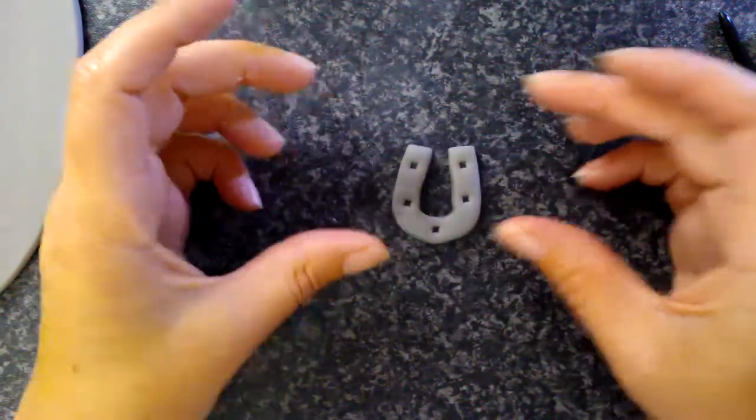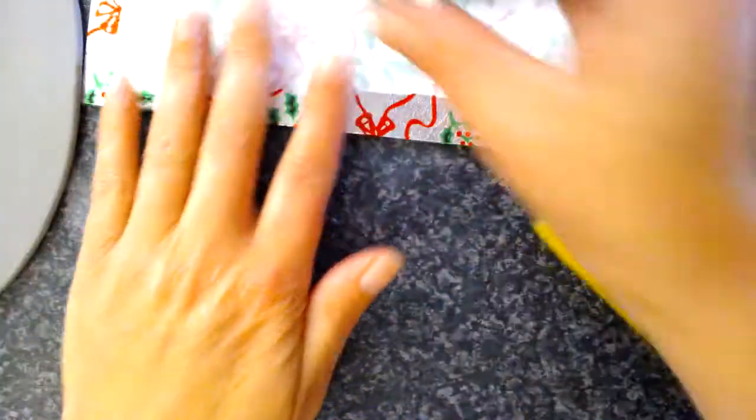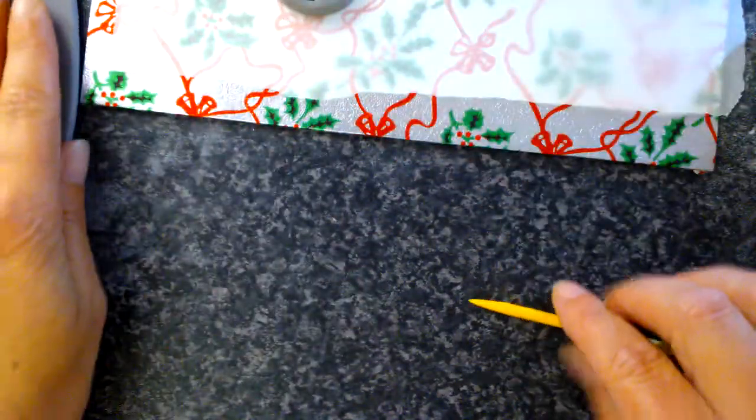And there we go. It's as easy as that. One horseshoe. And I should put that onto my tray and carry on making the rest of the set. Thank you very much for watching. See you soon. Bye.